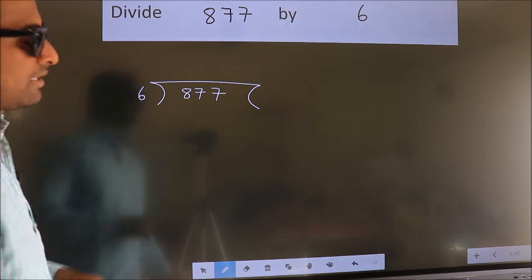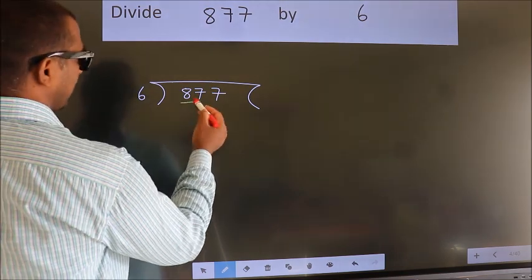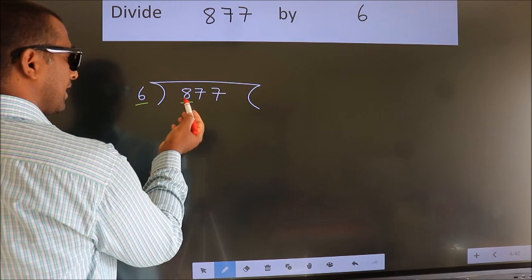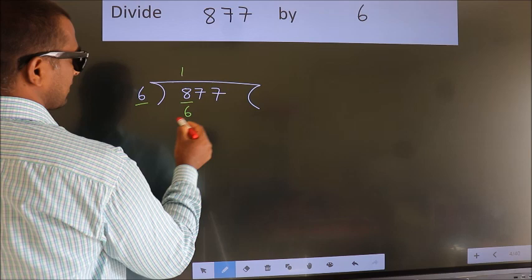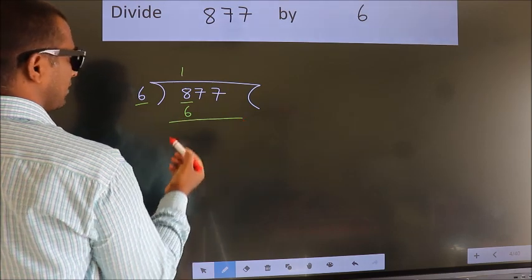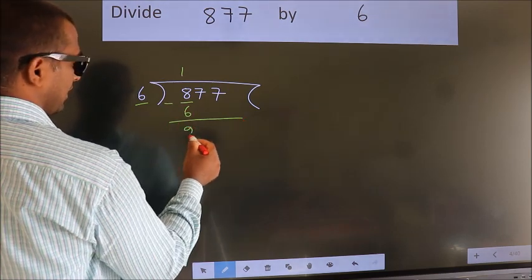Next, here we have 8, here 6. A number close to 8 in the 6 table is 6 once, 6. Now we should subtract. We get 2.